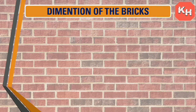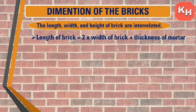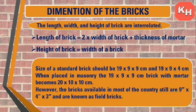The length, width, and height of bricks are interrelated. The length of a brick equals 2 times the width plus the thickness of mortar; the height equals the width. The size of a standard brick should be 19 cm × 9 cm × 9 cm. When placed in masonry, 1 cm is added, making it 20 cm × 10 cm × 10 cm.